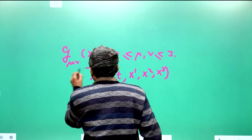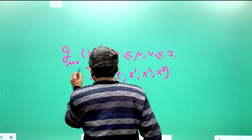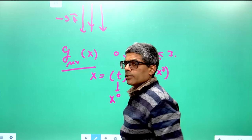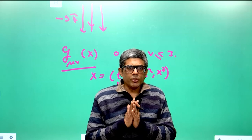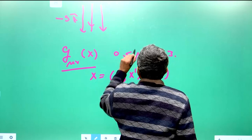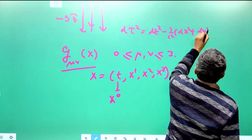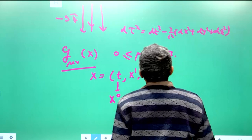Let us see how he arrived at such a conclusion. Suppose you take a gravitational field which is uniform along the z direction and allow an elevator to fall freely in this gravitational field. Then there will be absolutely no force within this elevator, and spacetime can be regarded as being flat within the elevator. We write the proper time interval as dτ² = dt² − (1/c²)(dx² + dy² + dz²).